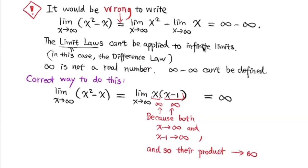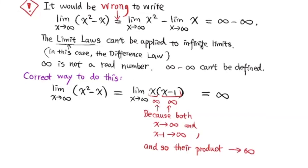The correct way to do this is to factor out the common factor x. We take out x, giving us x times (x − 1). Now as x goes to positive infinity, x − 1 also goes to positive infinity. Positive infinity times positive infinity means that product goes to positive infinity. So this limit does not exist, but the infinite limit is positive infinity.